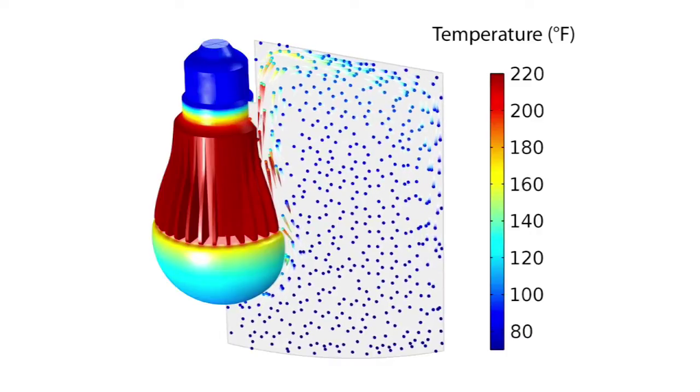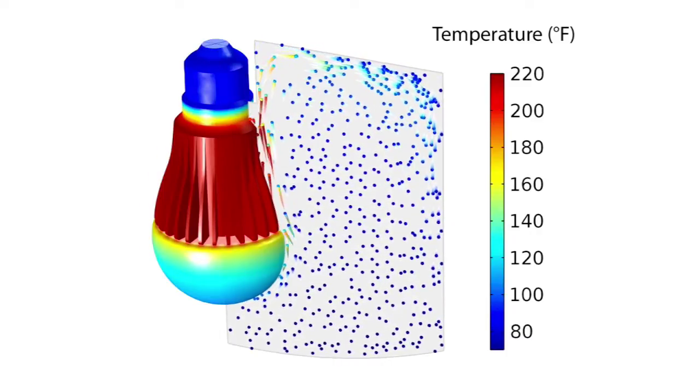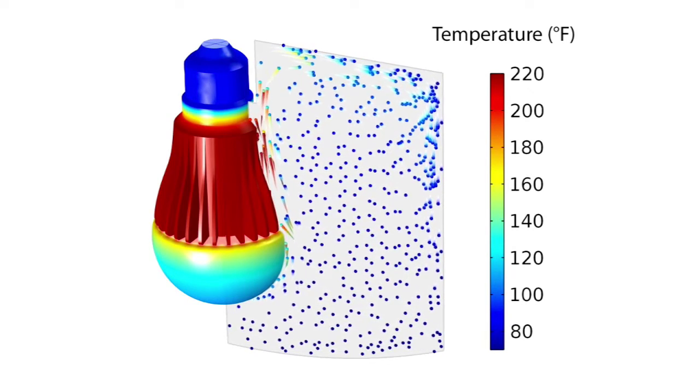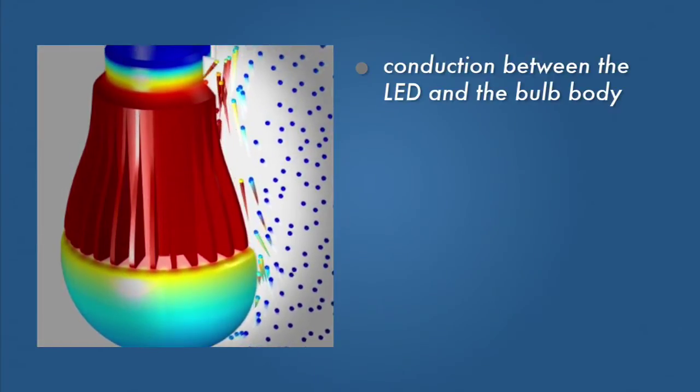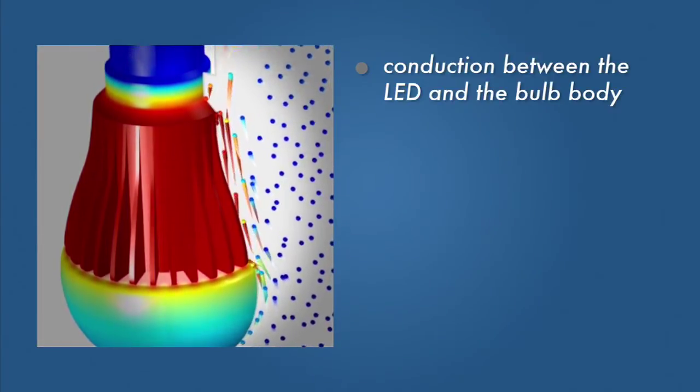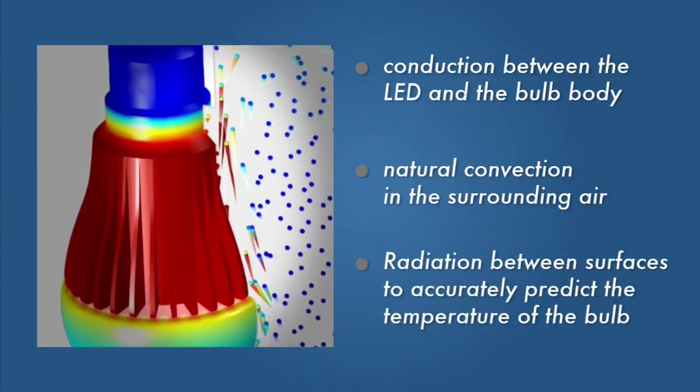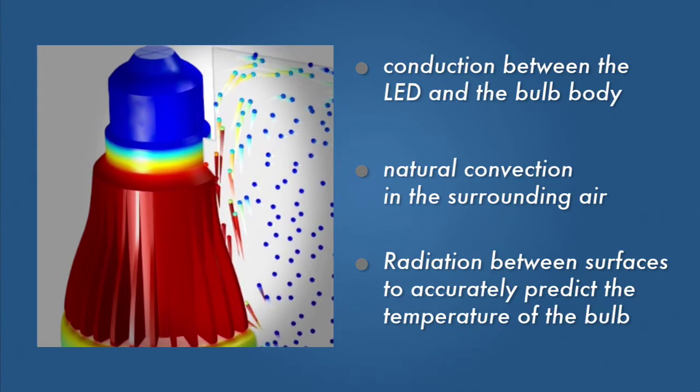This animation illustrates a mathematical model showing heat and air flow around an LED bulb in an enclosed recessed lighting fixture. The animation includes conduction between the LED and the bulb body, natural convection in the surrounding air, and radiation between surfaces to accurately predict the temperature of the bulb.